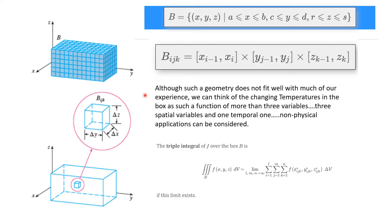Although such geometry does not fit well with much of our experience — because we can't think in four dimensions very well — you could think of this as the changing temperatures in a box. The temperatures could change as a result of where you are in the box based on three spatial variables, and then it could change over time as one temporal variable. Non-physical applications can also be considered in business where you can have many variables that you're studying.